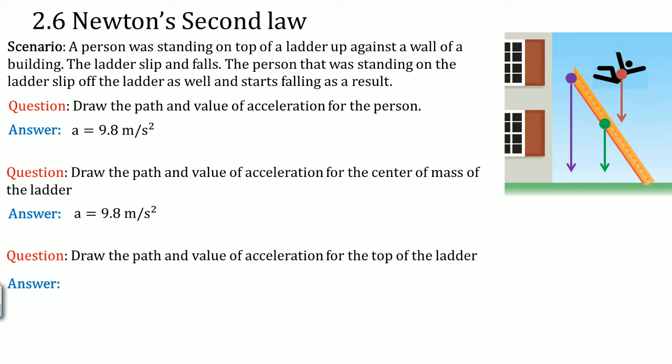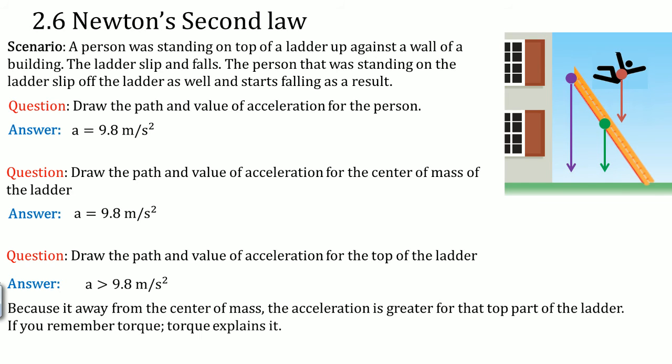The reason why the arrow is longer is because the acceleration is actually greater than 9.8 meters per second. The reason why is because it is away from the center of mass. The acceleration is greater at the top of the ladder as a result. The center is at 9.8. The top would be at greater than 9.8.